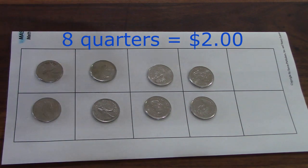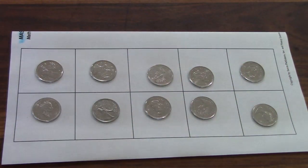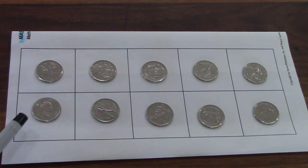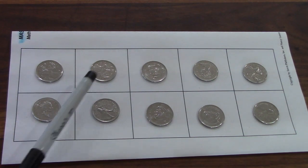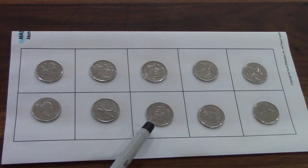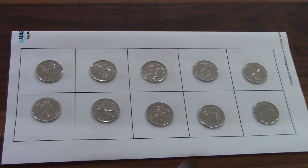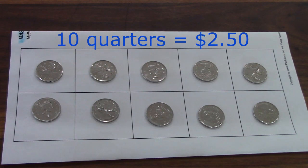I'm going to add a couple more quarters. Now I have ten quarters. Let's see how many cents I have. We can count by 25: 25, 50, 75, 100, 125, 150, 175, 200, 225, 250. We have 250 cents or two dollars and fifty cents.